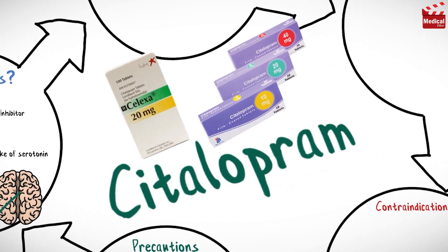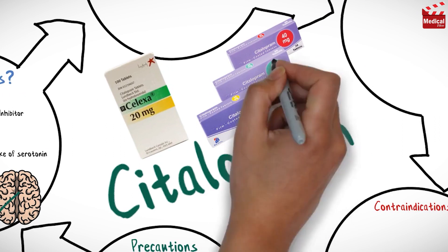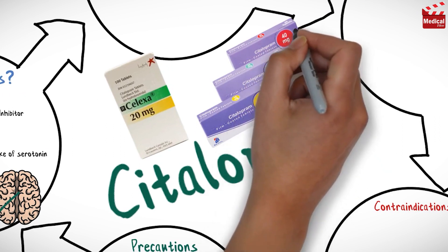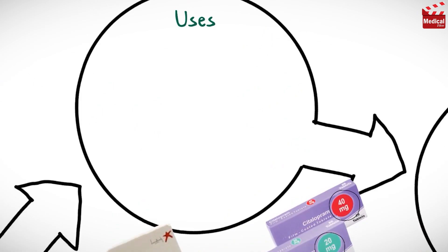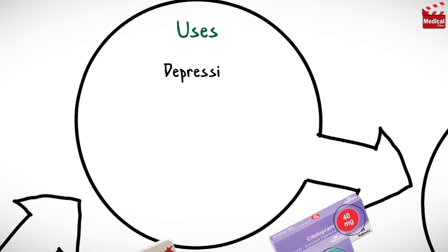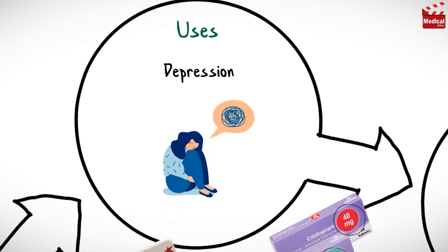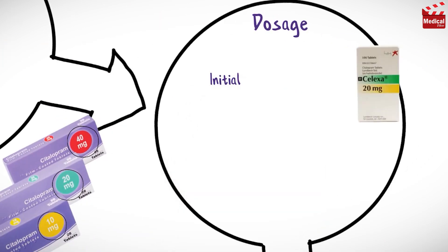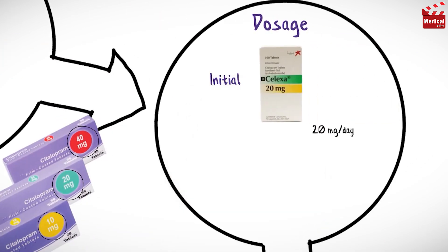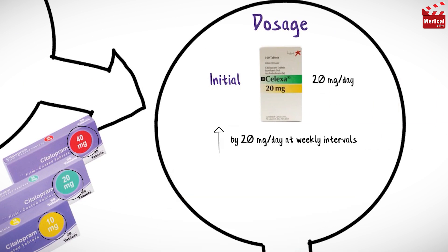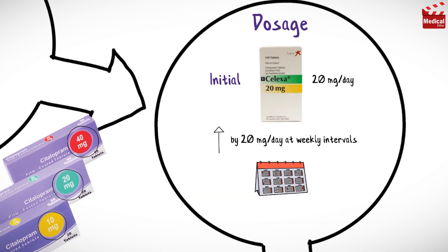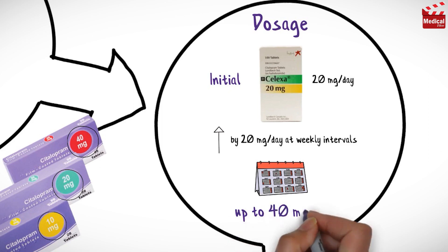It is available as 10mg, 20mg, and 40mg tablets. Citalopram is used in the treatment of depression, and the usual initial dose for adults is 20mg per day, that may be increased by 20mg per day at weekly intervals, up to 40mg per day.